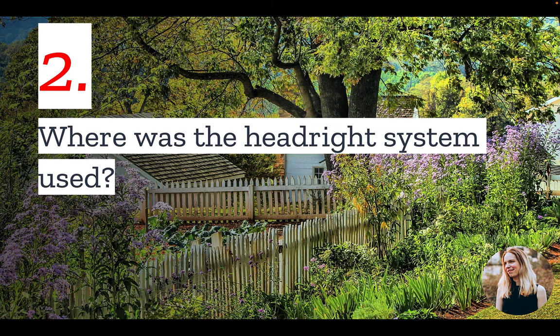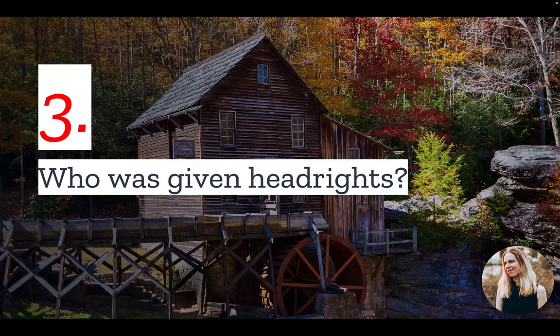Number two: where was the head right system used? Most notably, the Virginia Company granted head rights to settlers in Virginia. But this system was also used in Georgia, Maryland, North Carolina, and South Carolina.